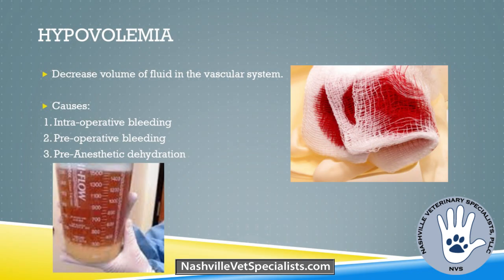Hypovolemia is a decrease in the volume of fluid in the vascular system. Every one of us has seen blood-soaked gauzes and a full suction bucket — these need to be taken into consideration because there is a measurable amount of blood that needs to be replaced. That's typically why patients under anesthesia are placed on fluids: to constantly provide replacement fluid. Not having enough fluid causes decreased cardiac output and stroke volume, which leads to decreased MAP, which leads to decreased tissue perfusion — that's hypotension.